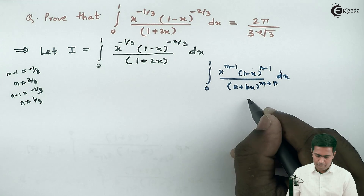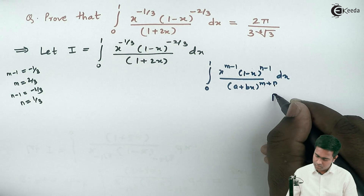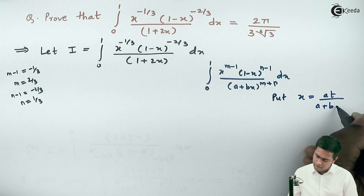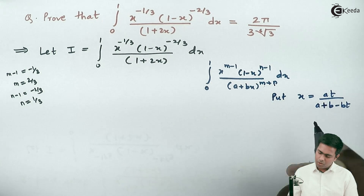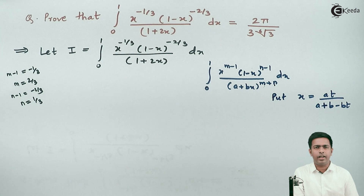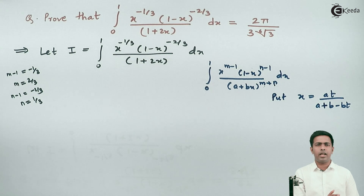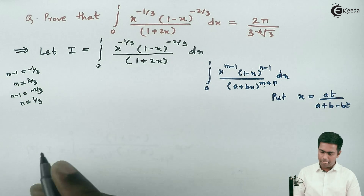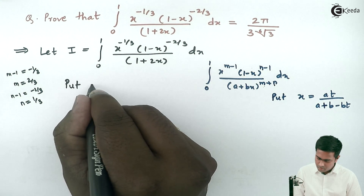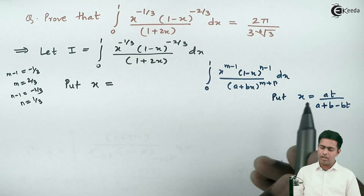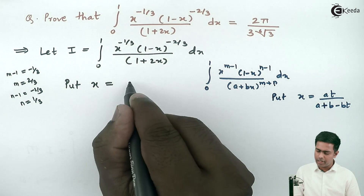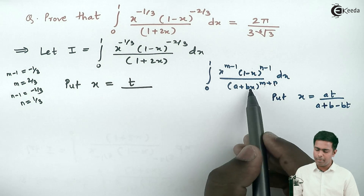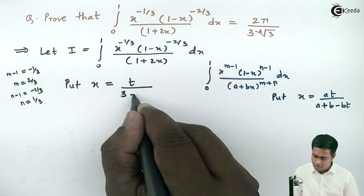In such cases we put x equal to at upon (a plus b minus bt). Substituting: here a is 1 and b is 2, so x equals t upon (1 plus 2 minus 2t), which is t upon (3 minus 2t).